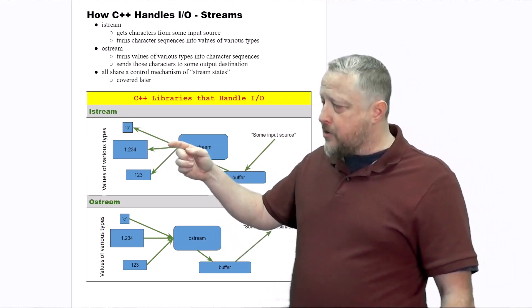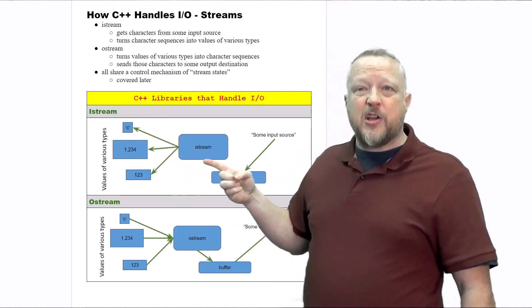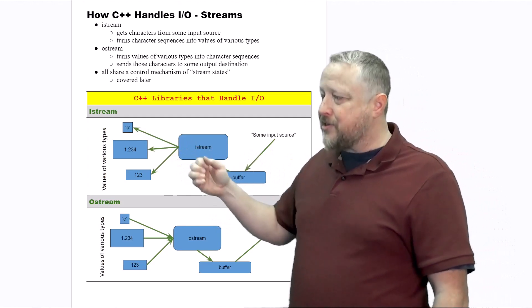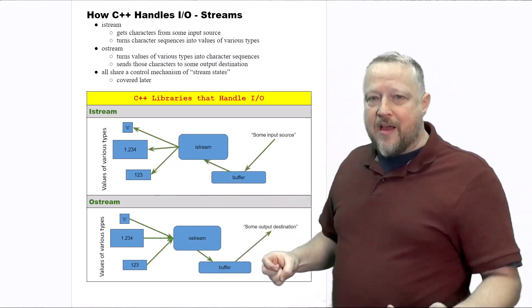Okay, that one's a character. I'm expecting a float, and the iStream takes care of that conversion from the text into the actual values of the various types that we have in C++.